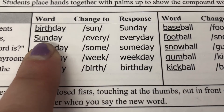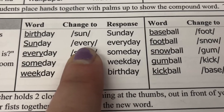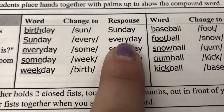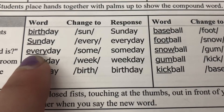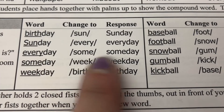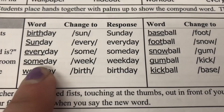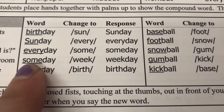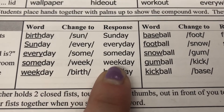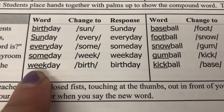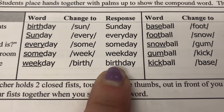Next word: Sunday — change sun to every — and the word is: everyday. Change every to some — and the word is: someday. Change some to week — and the word is: weekday. Change week to birth — and the word is: birthday.